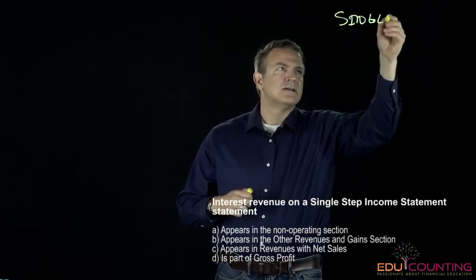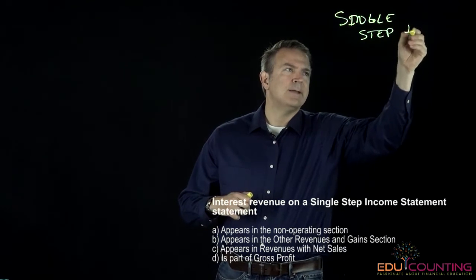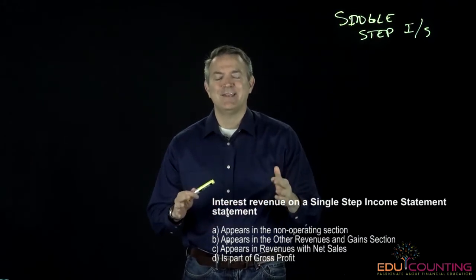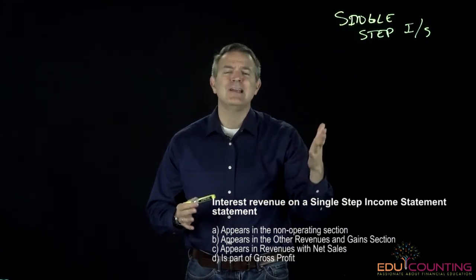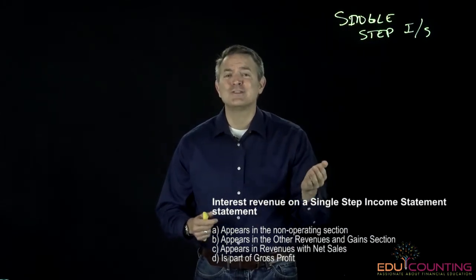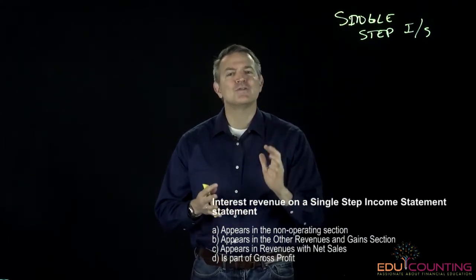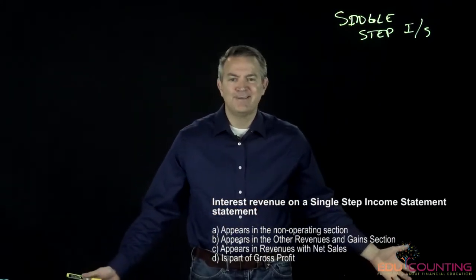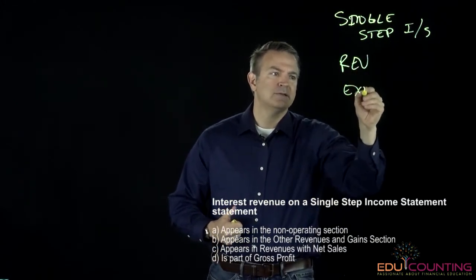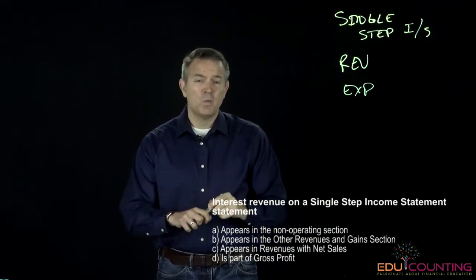Let's take a look at this question — it covers interest revenue on a single-step income statement. In a multi-step income statement, information is broken down so you can really understand what's going on in the company. It divides things between operating and non-operating, breaks out sales, returns and allowances, and gives you cost of goods sold so you can get gross profit. But a single-step essentially throws everything into just two buckets: revenue and expenses — nothing more.